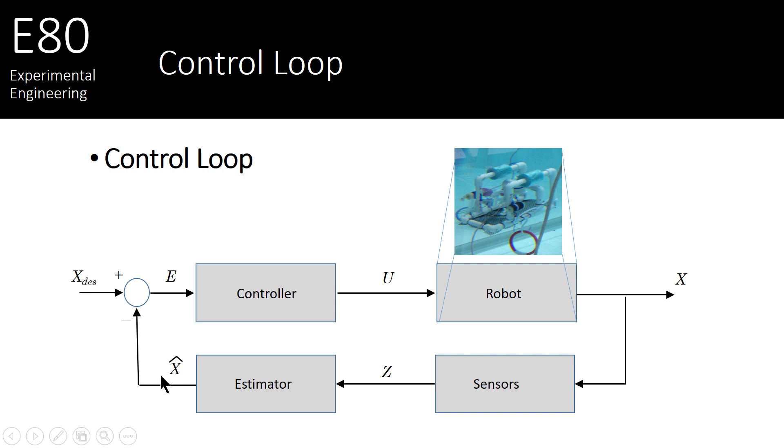Now typically, to determine how fast we should spin our thrusters, we look at the difference between our desired state of the robot, maybe it's the desired position and orientation, and the estimated position and orientation of the robot. The difference between these two vectors is our error vector, which will be fed into our controller, which will determine the control effort, or how fast we should spin these motors.